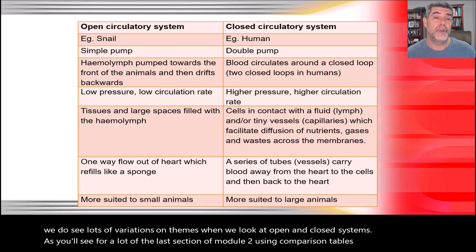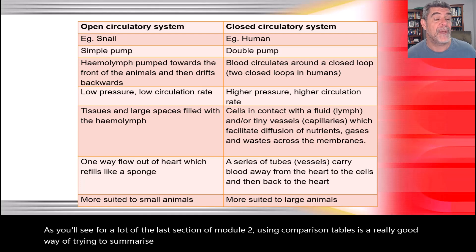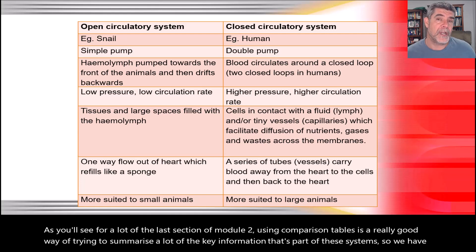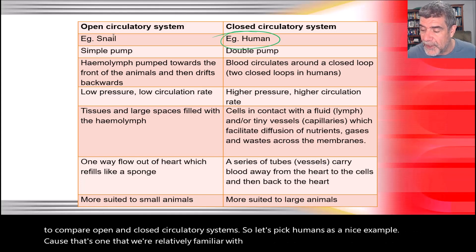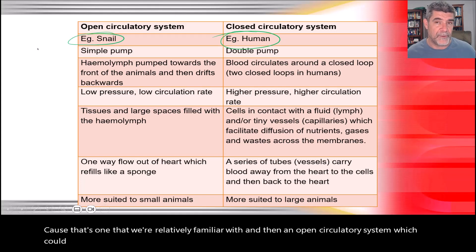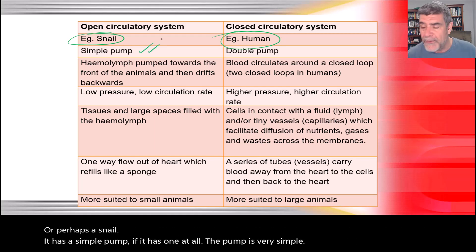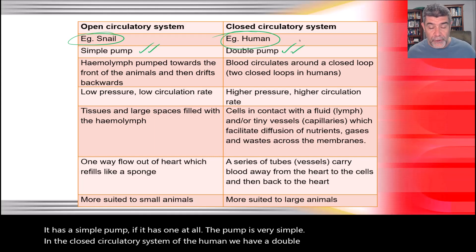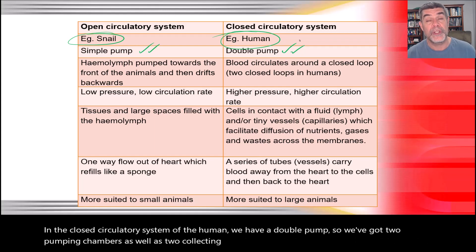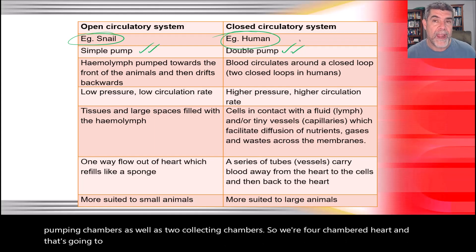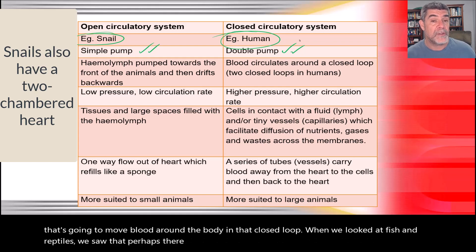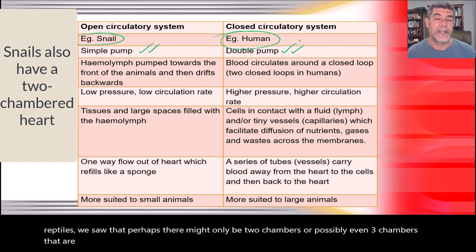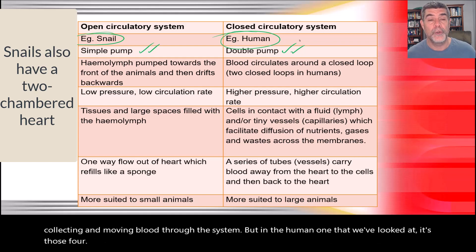Using comparison tables is a really good way of summarising key information. Comparing open and closed circulatory systems: in humans, a closed system, we have a double pump — two pumping chambers and two collecting chambers, a four-chambered heart — moving blood around in a closed loop. In fish and reptiles there may be only two or three chambers, but in humans it's those four chambers with the double pump.